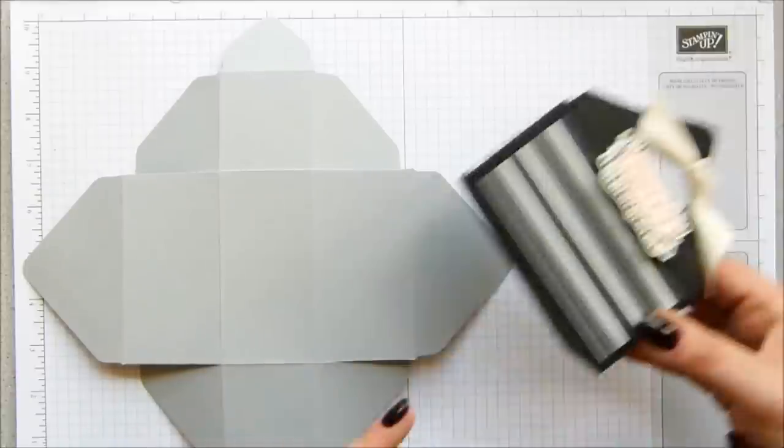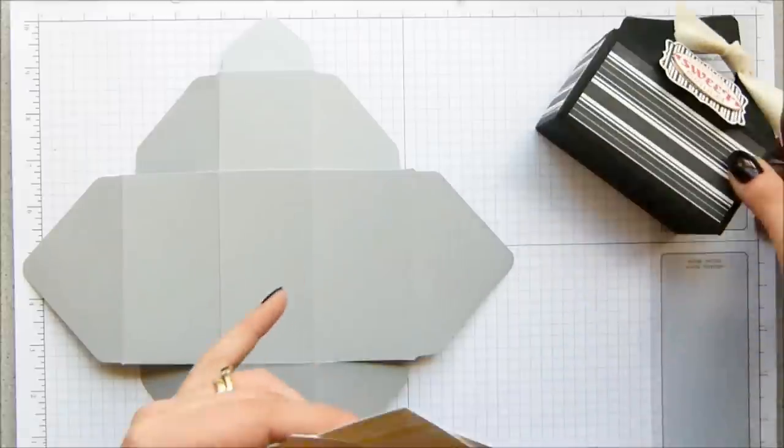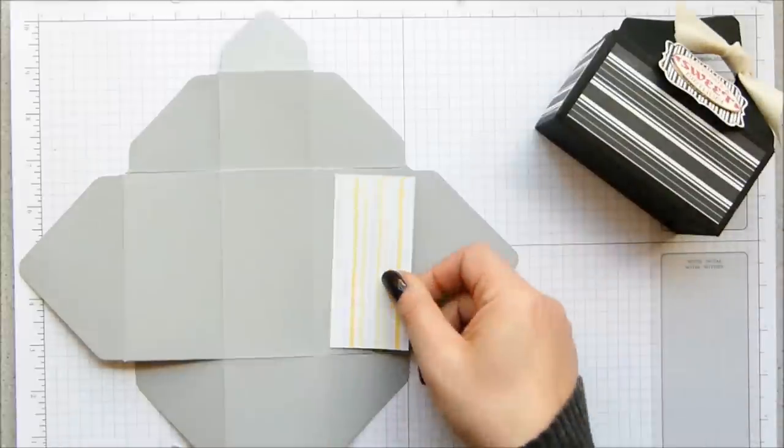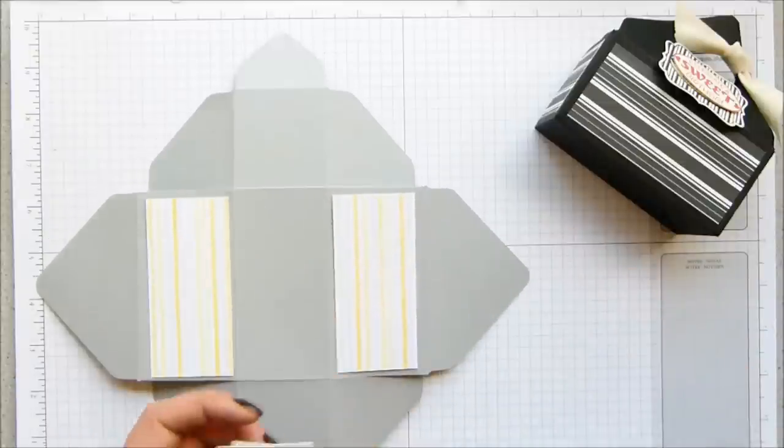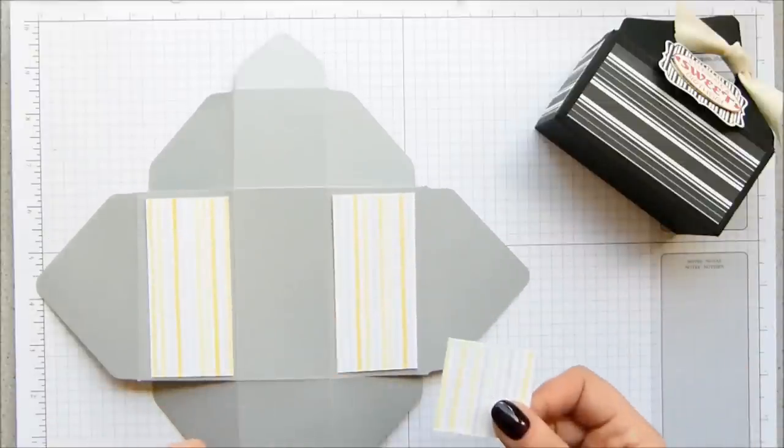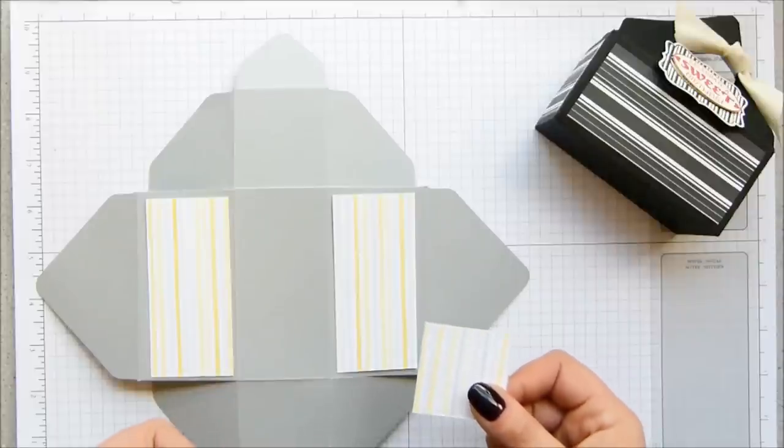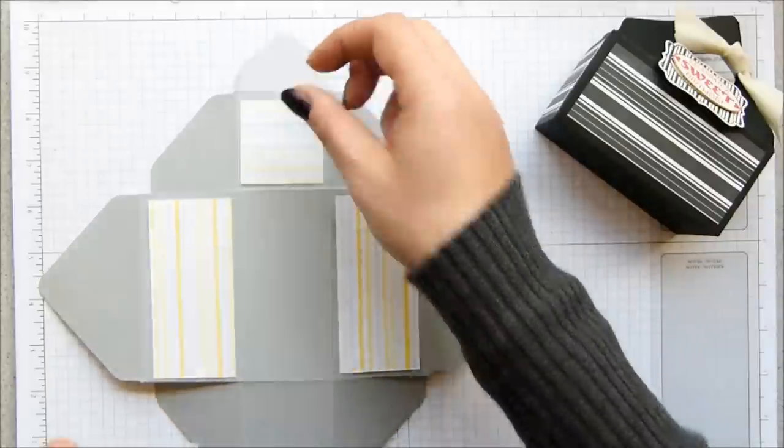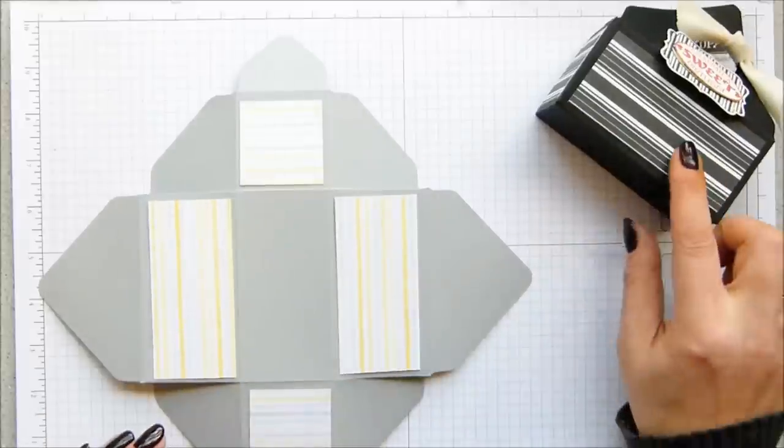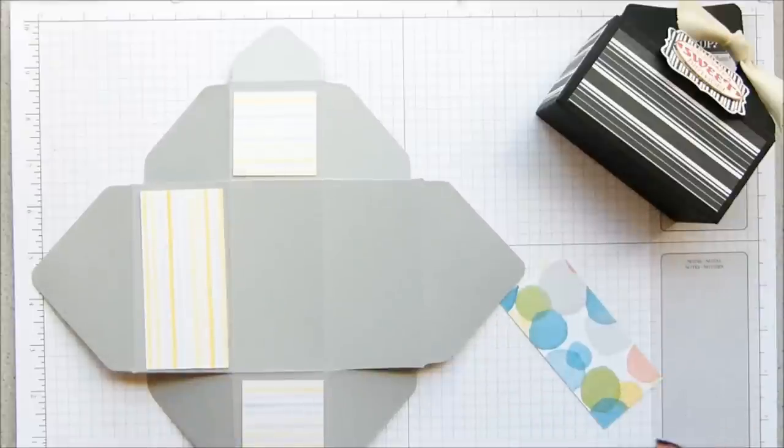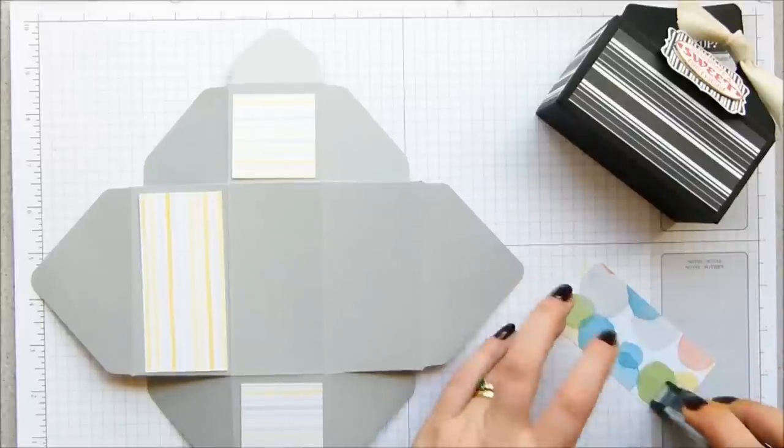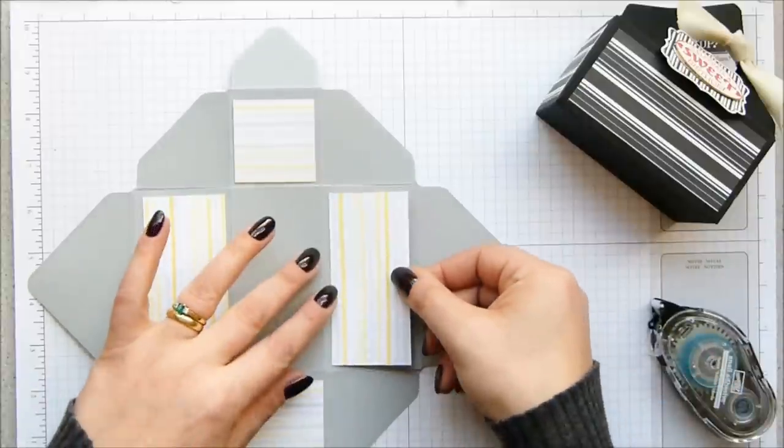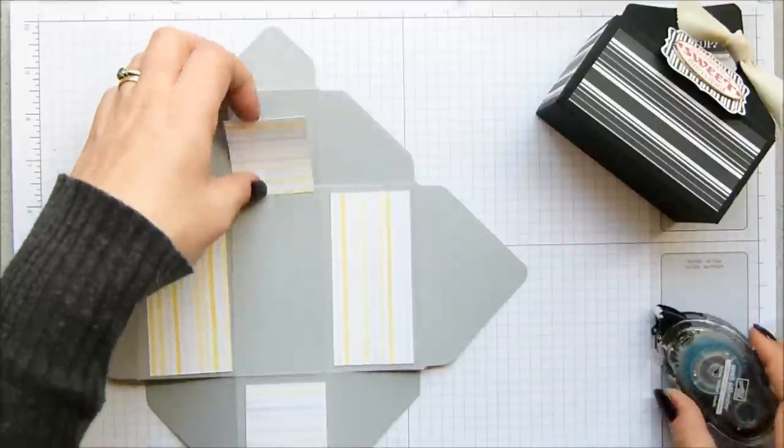Now the pieces of cardstock we need, or paper rather, that go on this part here. We need two that measure three and three quarters by one and three quarters, which is nine by four. They're going to go there and there. And then we need two that measure one and three quarters by one and three quarters, which is four by four. And they're going to go there and there. This was basic black with the modern medley designer series paper. This time I've gone with smoky slate and the watercolor wonder paper. And it's lovely. And it's just a bit different.